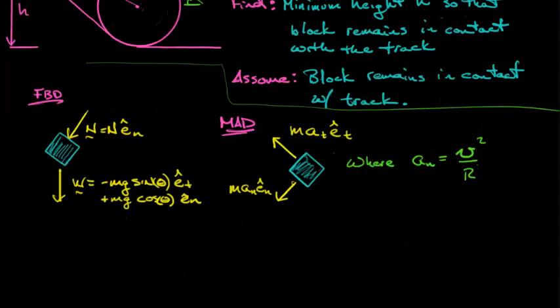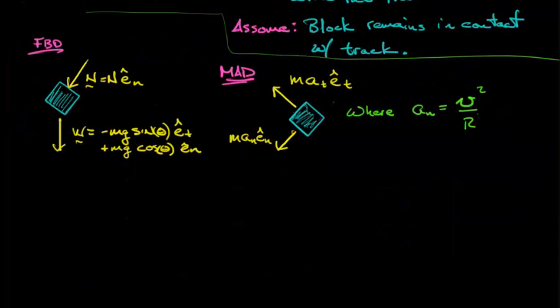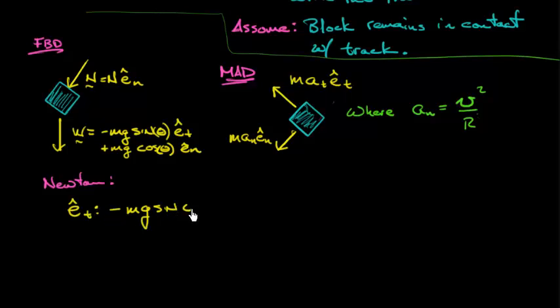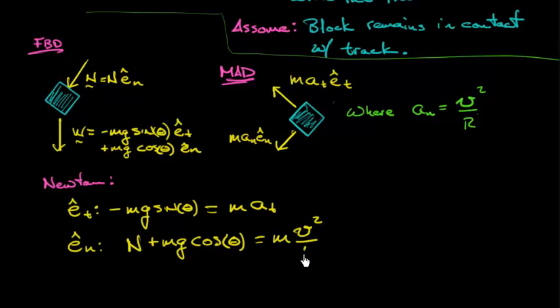Now we're going to scroll down and start doing some Newton's second law analysis. In the e hat t direction, minus mg sine theta equals mass times that tangential component of acceleration. And in the e hat n direction, I've got normal force pushing, I've got weight pushing. This has to equal mass times the normal component of acceleration, or mass times speed squared at this instant divided by the radius.